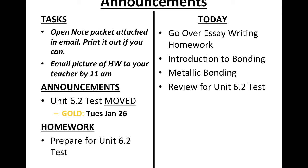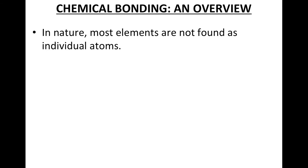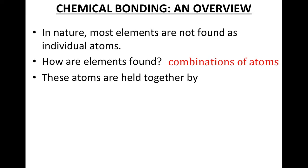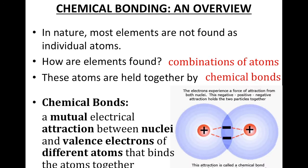Today we are going to introduce bonding, most specifically metallic bonding. So, chemical bonding — an overview. In nature, most elements are not found as individual atoms; they're actually found as a combination of atoms. We don't just see one sodium atom — we see a combination of multiple sodiums, or sodiums with other atoms. These atoms are held together by chemical bonds.